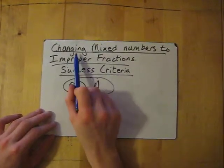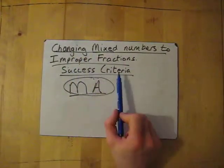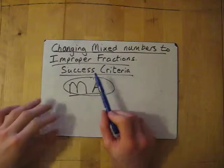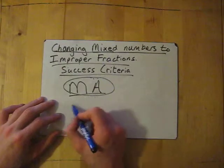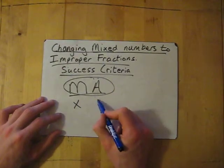Alright, this video, very important, is for changing mixed numbers to improper fractions. And the success criteria for this is MA. Now MA stands for multiply, then add.